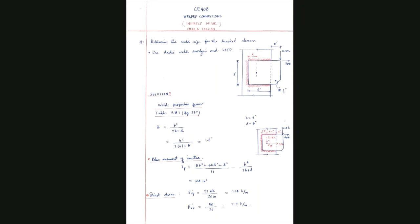We need to size the weld for the bracket shown. To calculate the eccentricity and Ip, we need to know properties of the weld — we need to assume the weld layout first. In this problem the weld dimensions are given but the weld size 'a' is the unknown. A plate attached to the flange of a W-shape is acted upon by two eccentric shear forces, one in the y-direction and one in the x-direction. The plate thickness is half an inch.